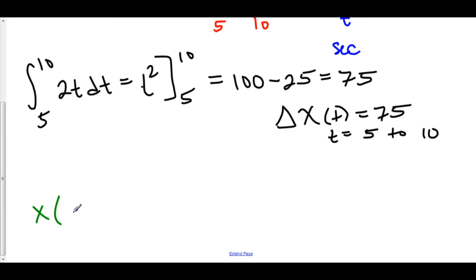x of B, the function value at any value, is equal to the function value at A, plus the net change from A to B, and the net change is the integral of the derivative of that function value.